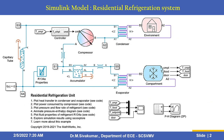This is a Simulink model of this residential refrigeration system. It consists of a controller subsystem, compressor, condenser, environmental subsystem, compartment subsystem, accumulator, R134A refrigerant properties, and a capillary tube with interactive animation of the pressure-enthalpy diagram.